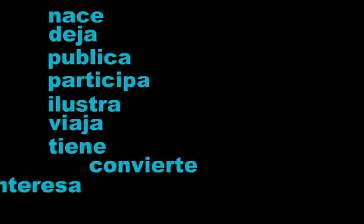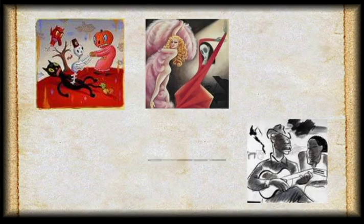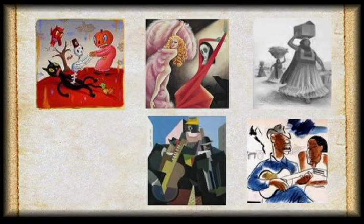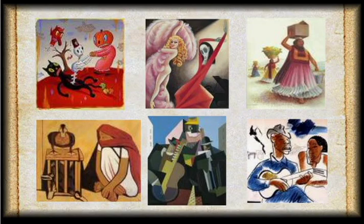¿Por qué crees que en el fragmento biográfico anterior sobre Miguel Covarrubias se habla en tiempo presente, aunque los hechos relatados pertenezcan al pasado? Es un recurso gramatical conocido como presente histórico, el cual solo se emplea para referirse a situaciones que ya forman parte del pasado. La intención es construir un relato más vívido al traer la narración al presente.